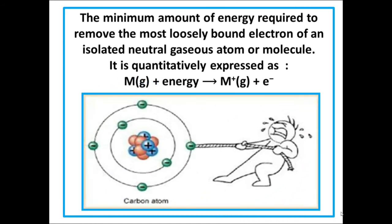So we can say the minimum amount of energy required to remove the most loosely bound electron of an isolated neutral gaseous atom or molecule. It is quantitatively expressed as the following equation. The metal can be formed into a cation, and formation of cation requires energy. That energy is known as ionization energy. Cation having positive charge.